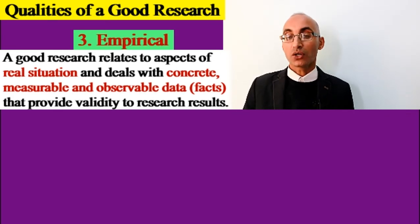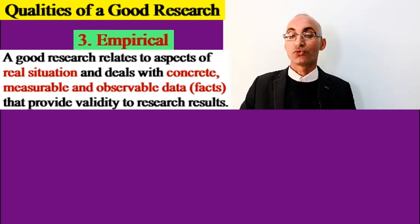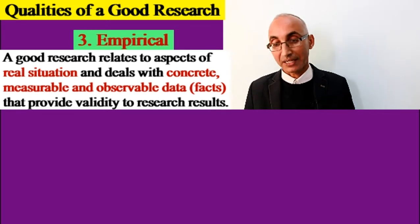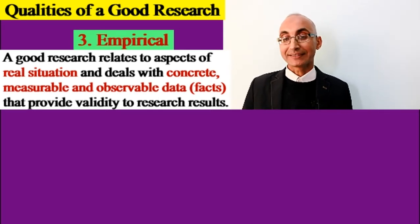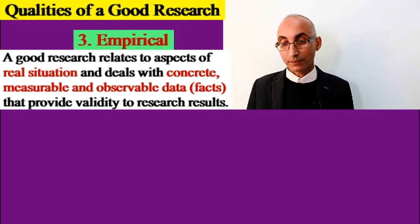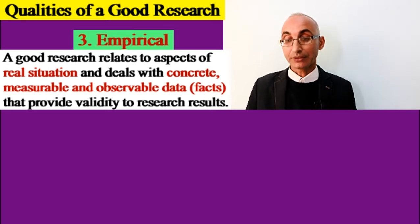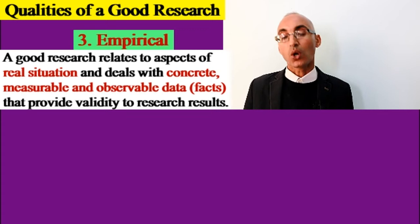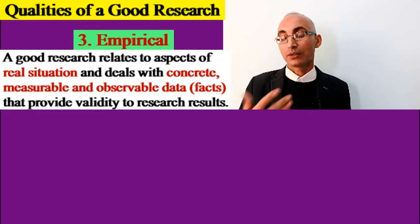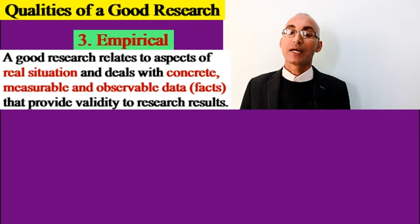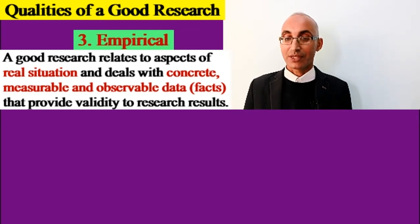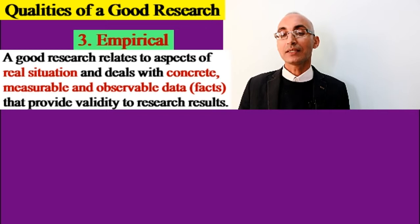Third, good research is empirical. This means the research should relate to aspects of real situations — what is practical and measurable. It deals with concrete data: what is observable, what is measurable, and with facts. Empirical research deals with what is quantifiable for sound decisions, always depending on the nature of the phenomenon being studied. There must be something concrete, observable, and measurable in the study.